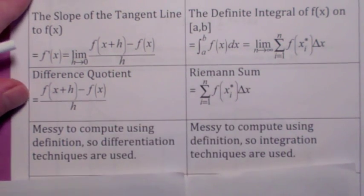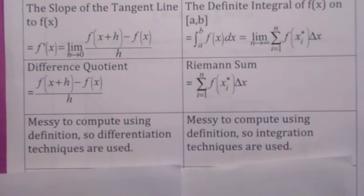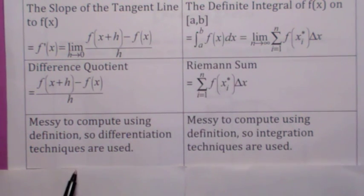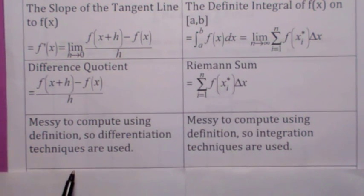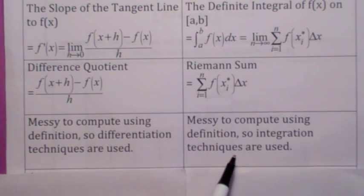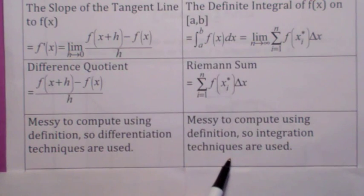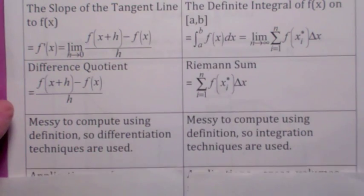You certainly recall from last quarter that when you first defined the derivative, it was very messy to compute. You had to go through the difference quotient and do a lot of algebra, and you finally learned those differentiation rules in Chapter 3 that made the whole thing a lot easier. Same thing's going to happen here. We're going to learn some integration rules that are going to make the computations a lot easier in just the next section, actually.